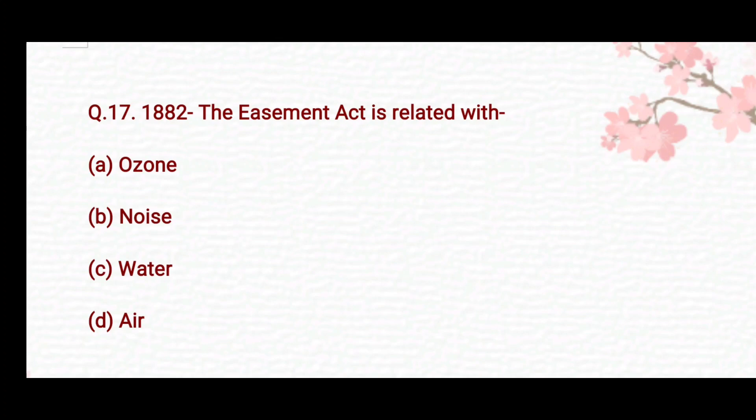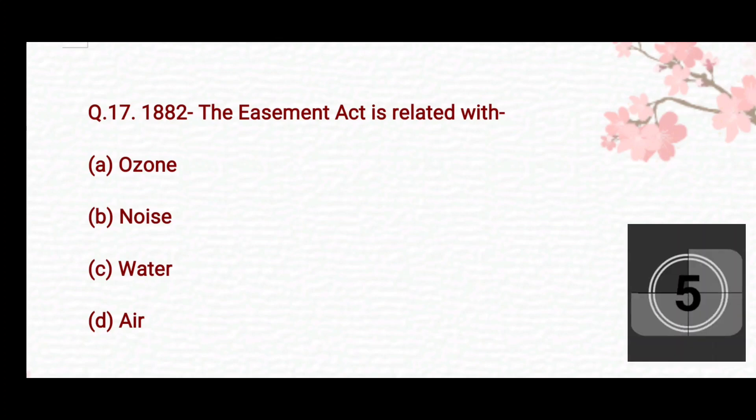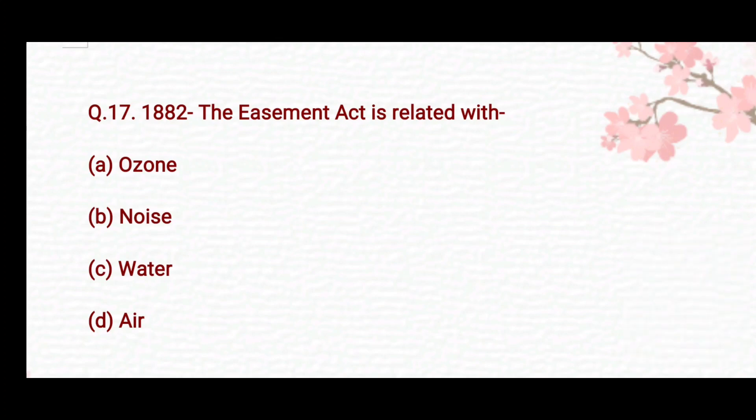The 1882 Easement Act is related with which of the following? Option A: ozone. Option B: noise. Option C: water. Option D: air. The right answer is Option C — water.